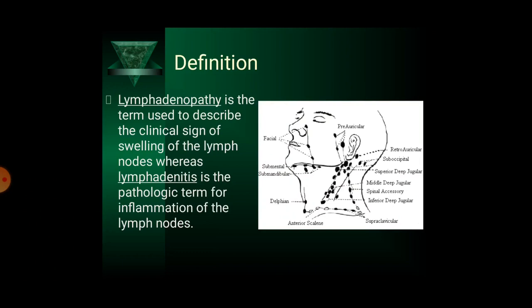This picture shows the various lymph nodes in the head and neck region. We have the facial lymph nodes, submental, submandibular, the supraclavicular, the jugular, the spinal accessory, suboccipital, retroauricular and preauricular.